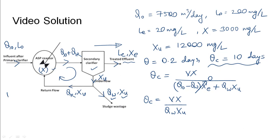So theta_c becomes VX over Qw into Xu. In this case, V is not given. For that we can use the hydraulic retention time, that is V over Q0. This would give V as Q0 into theta. Q0 is given as 7500 meter cube per day into theta is 0.2 days. This would give V as 1500 meter cube.